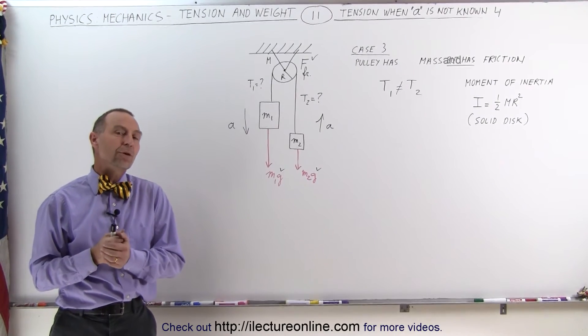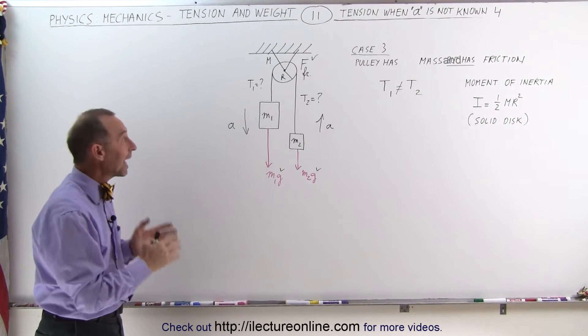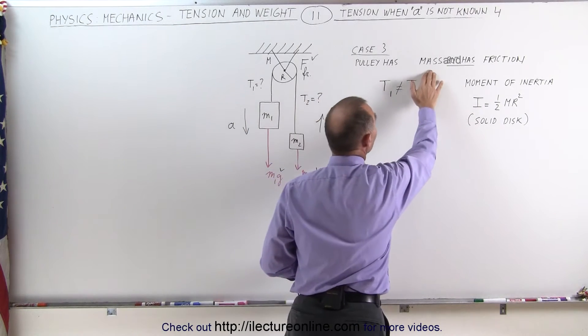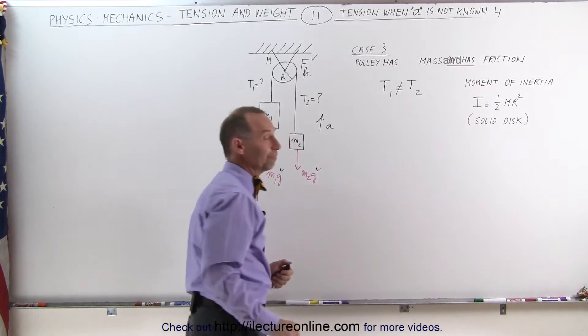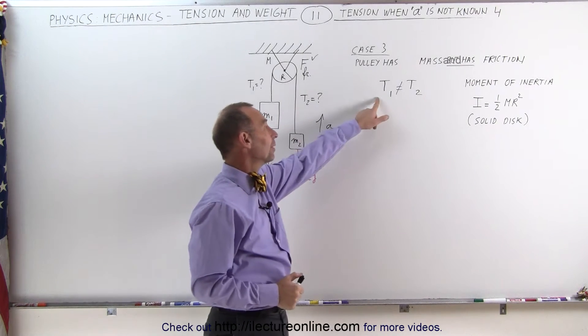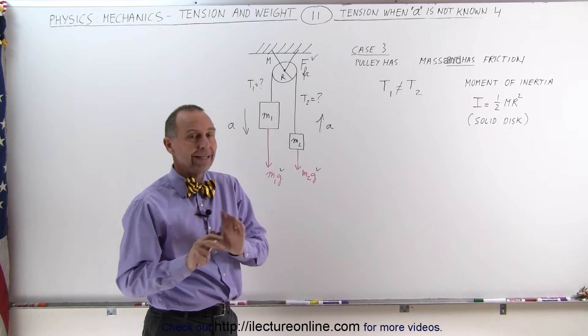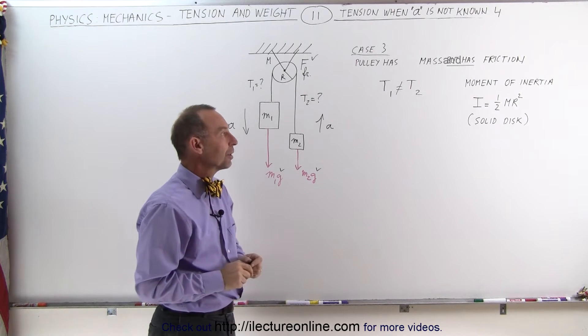Welcome to our lecture online. Now we're going to look at case number 3. We still have the Atwood machine, but in this case the pulley both has mass and it also has friction. And again we know that tension 1 cannot equal tension 2. If it either has mass or it has friction, the answer is tension 1 cannot equal tension 2.